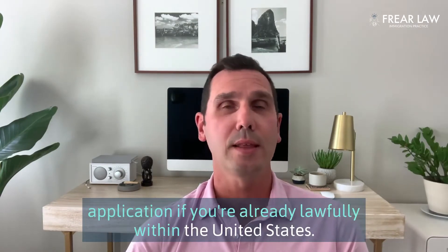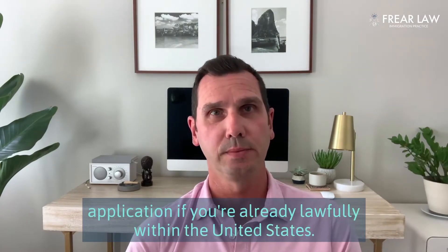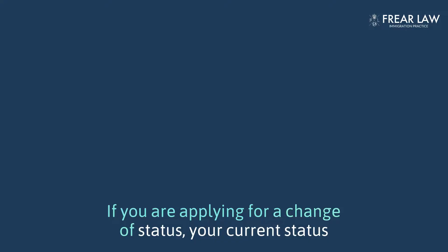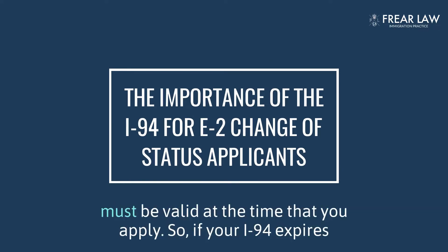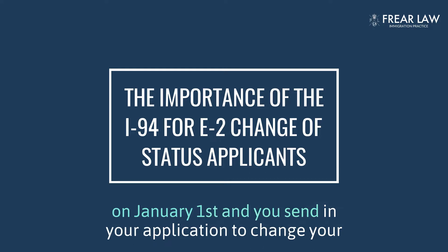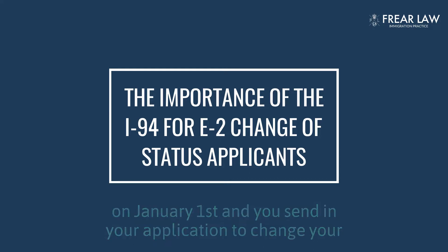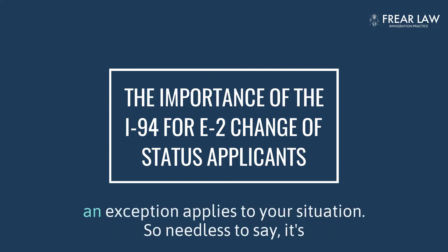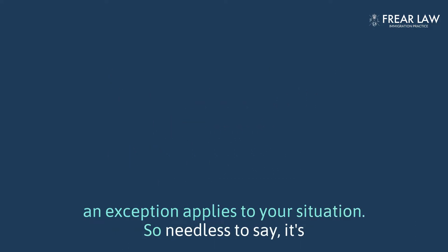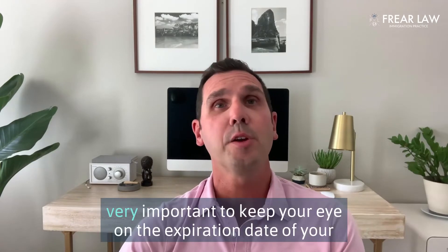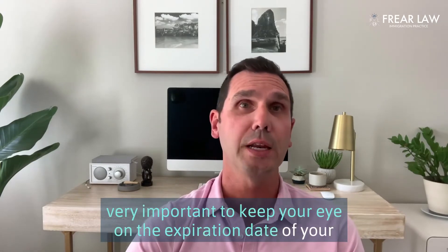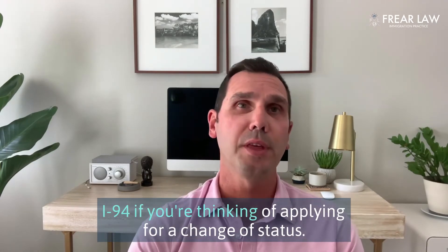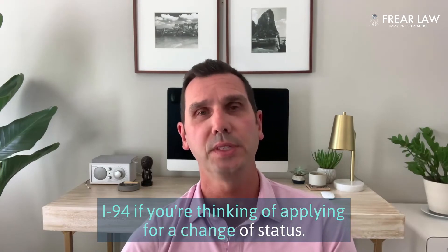If you're already lawfully within the United States and applying for a change of status, your current status must be valid at the time that you apply. So if your I-94 expires on January 1st and you send in your application on January 2nd, you will typically be out of luck unless an exception applies to your situation. So it's very important to keep your eye on the expiration date of your I-94 if you're thinking of applying for a change of status.